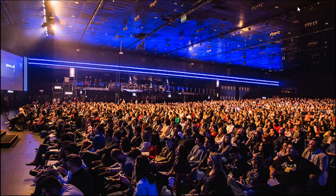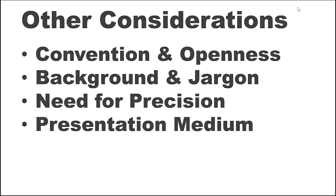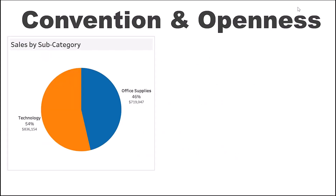We need to keep our audience top of mind if we want effective communication to happen. So let's go through some other considerations that can help us maximize the reception of our message and data story. We don't have full control over any or all of these, but awareness of these considerations can go a long way. First is convention and openness. Second is all about background and use of jargon. Third is about the need for precision. Fourth is about the presentation medium. And fifth is about the time that our audience has to look at our visuals and data story, and how we can potentially incorporate interactivity. Let's talk about convention and openness first.